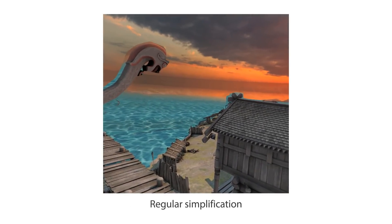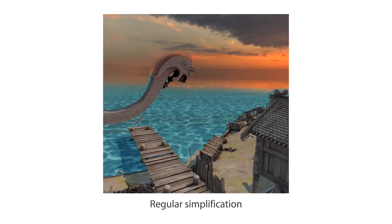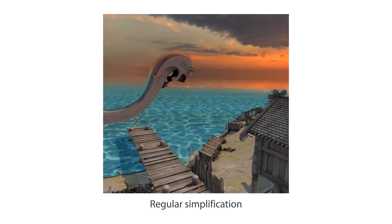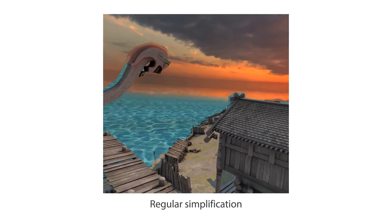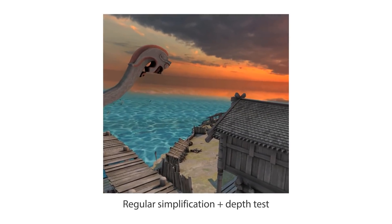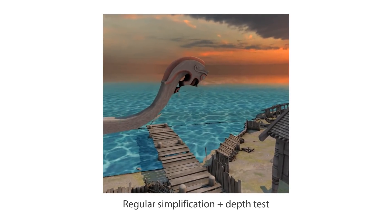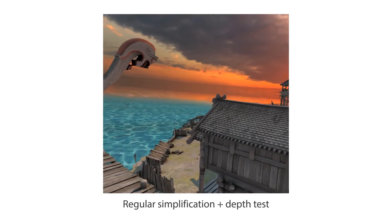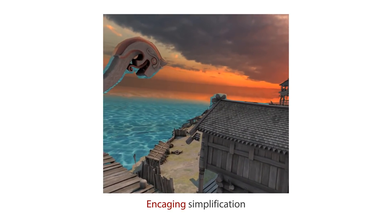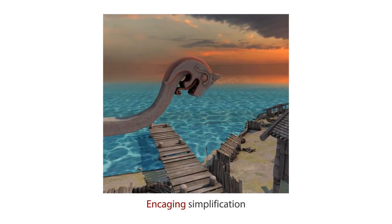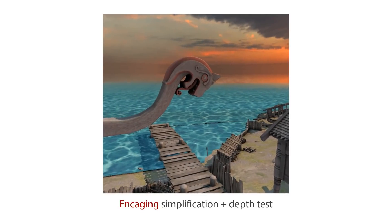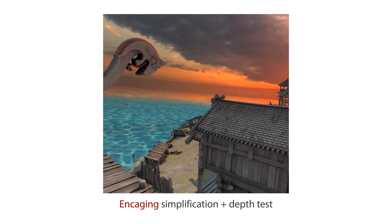A pixel shader gathers and combines colors from the dual-view representation. Naive geometric simplification causes some background samples to be drawn on foreground objects and vice versa. We use a depth test to remove erroneous background samples; however, this cannot recover foreground parts that are cut off by the simplification. To solve this problem, we generate a simplification that strictly encages the original geometry, guaranteeing no foreground samples will be removed. Now we can use a depth test to preserve all original silhouette details.